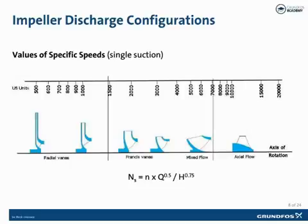In the specific speed equation, ns is the specific speed, n is the pump rotational speed in RPMs, q is the flow in gallons per minute, and h is the head in feet.